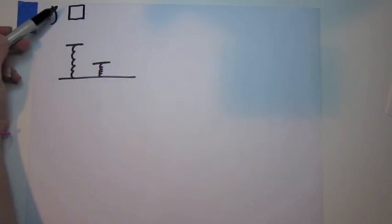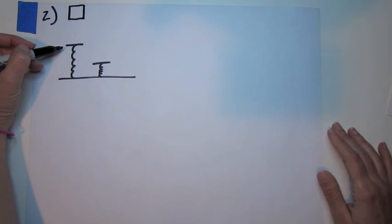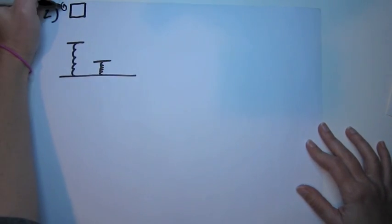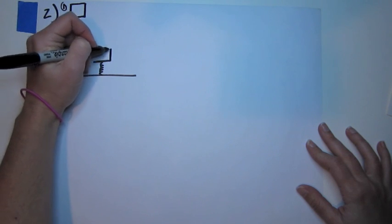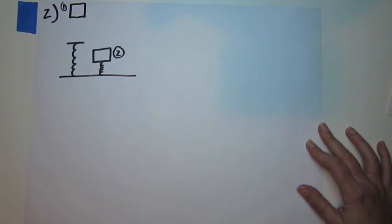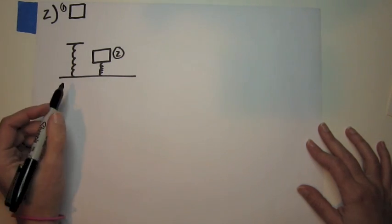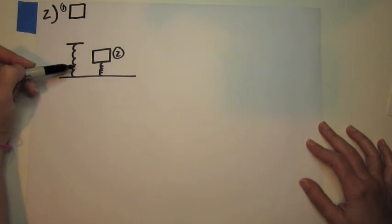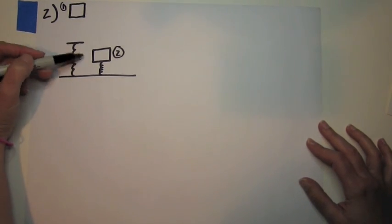So the basic situation is time one, it's released from above a spring that can compress. Time two is when the spring is fully compressed. Now when I have a compressing spring, I often like to draw the number one and two next to each other instead of on top of each other. It's just clear for me to see what's actually happening.